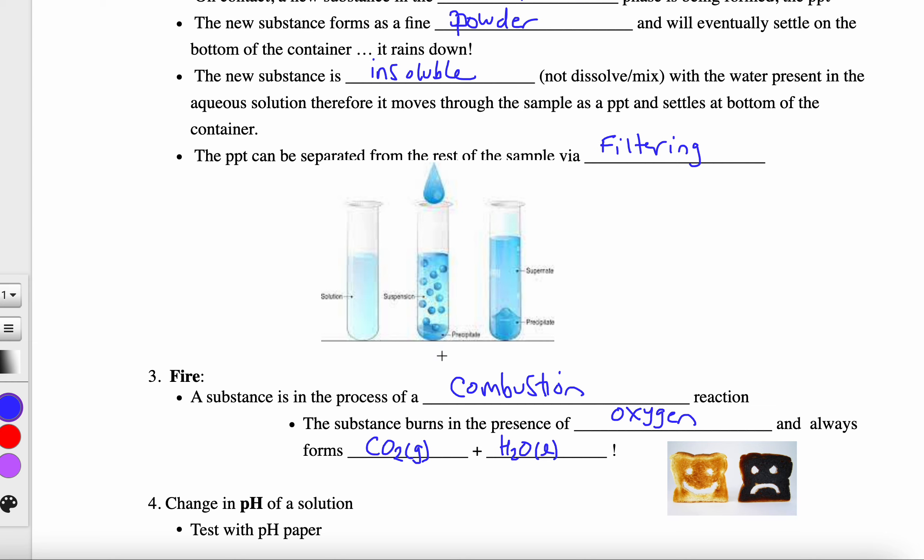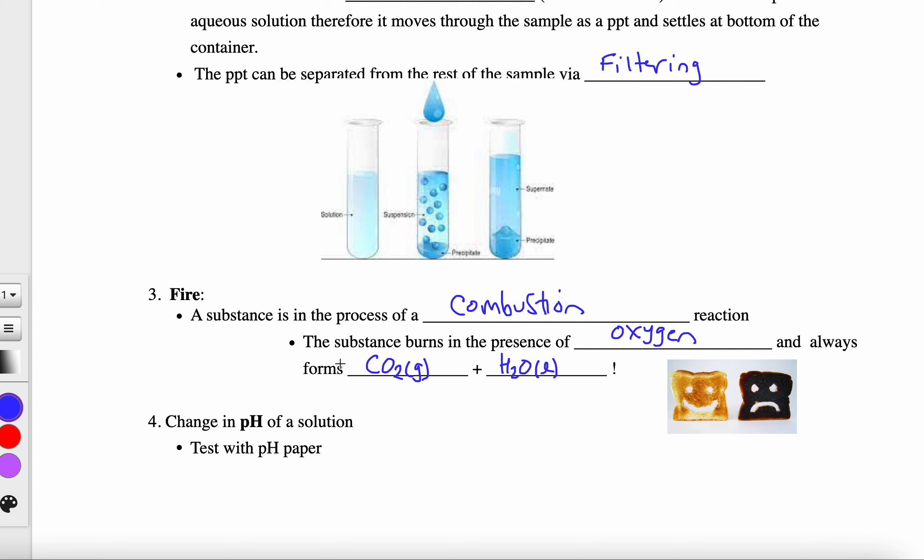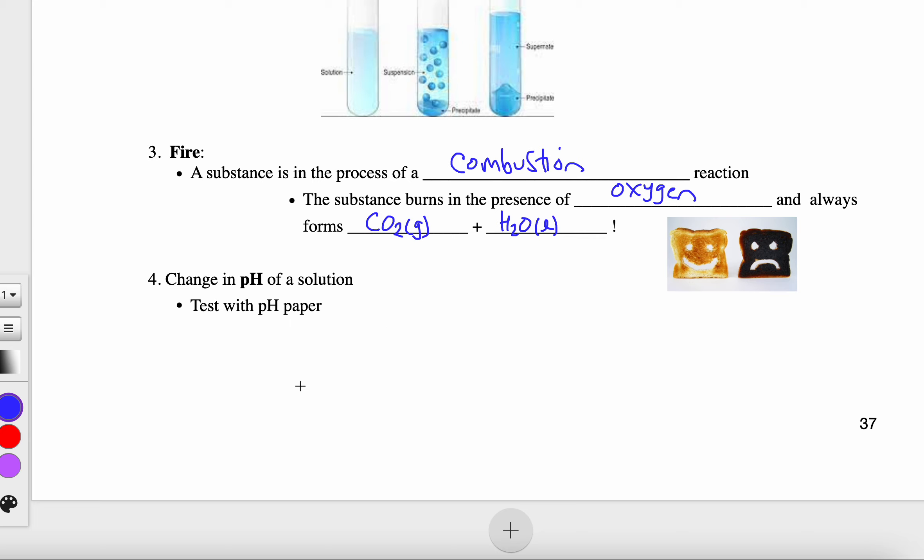The last thing we can monitor for, depending on what we're working with, is the pH of a solution. If there is a change in the pH of a solution, that means that probably some sort of neutralization reaction has occurred or has partially occurred.